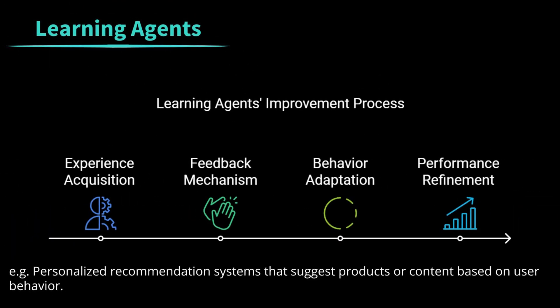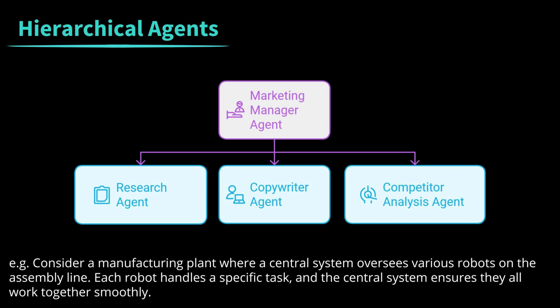Now let's explore learning agents. Learning agents are like students of the AI world — they continuously learn from their experiences to improve their performance, using feedback mechanisms to adapt and refine their behavior over time. Think of a customer service chatbot that becomes better at answering questions the more it interacts with customers. They are perfect for environments where conditions change over time. Finally, we have hierarchical agents, organized in tiers like a management structure. Higher-level agents break down complex tasks into smaller subtasks and assign them to lower-level agents. Consider a manufacturing plant where a central system oversees various robots on an assembly line, each handling a specific task.